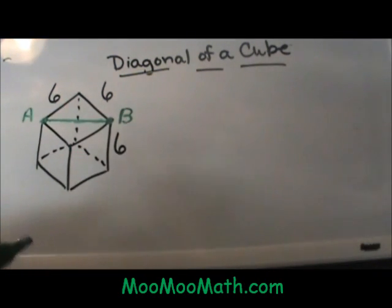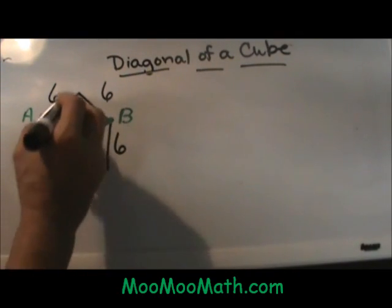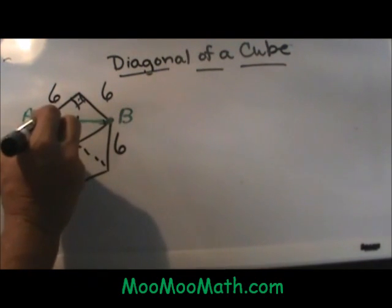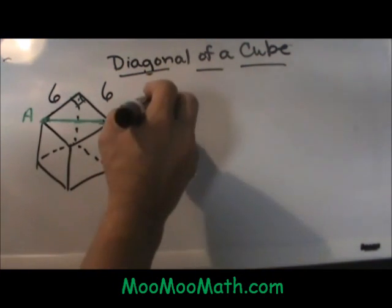How would I find that distance across the top of a cube? If you can see we are going to isolate this triangle and use the Pythagorean Theorem.